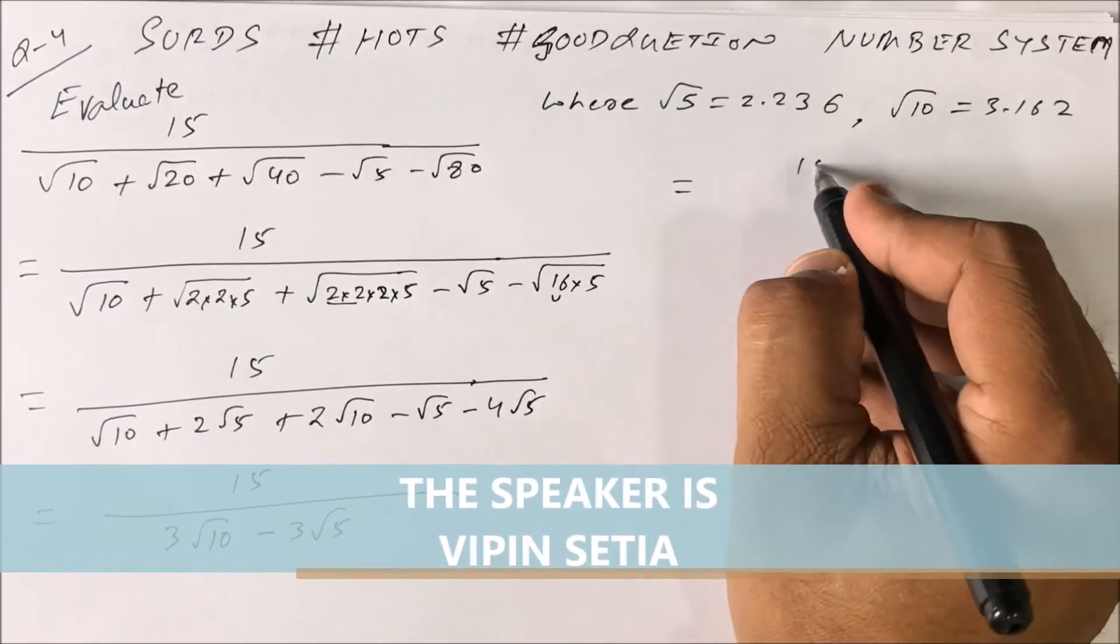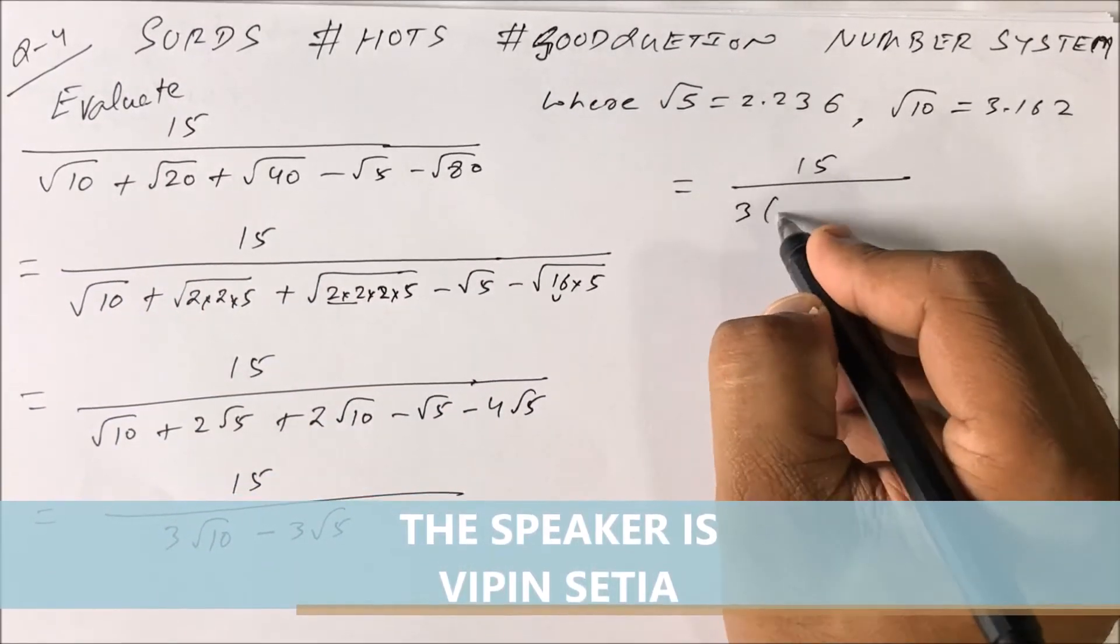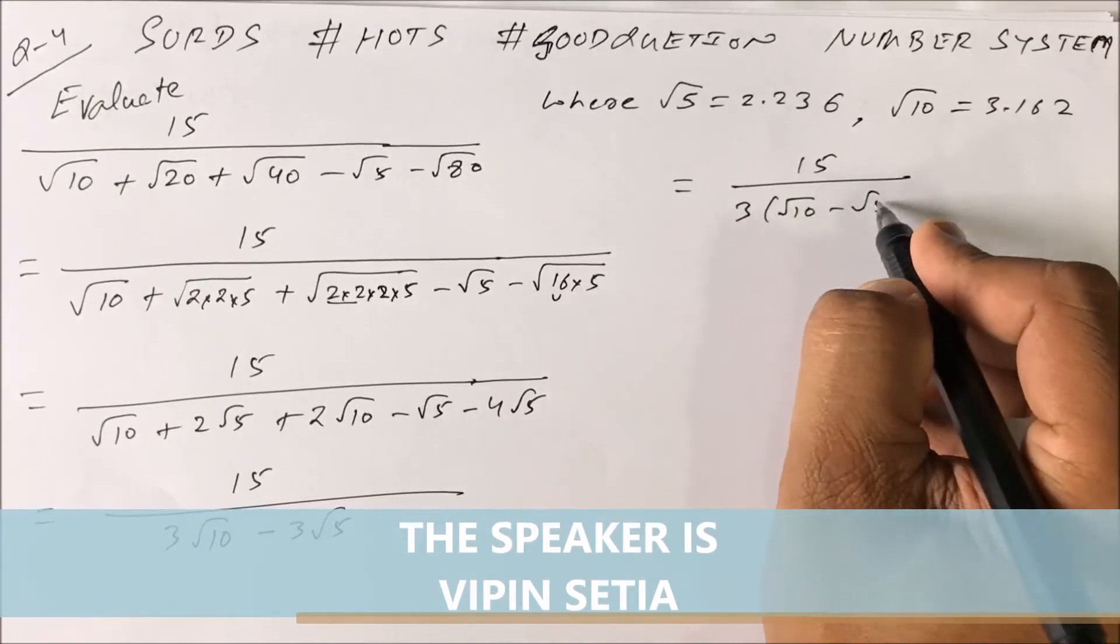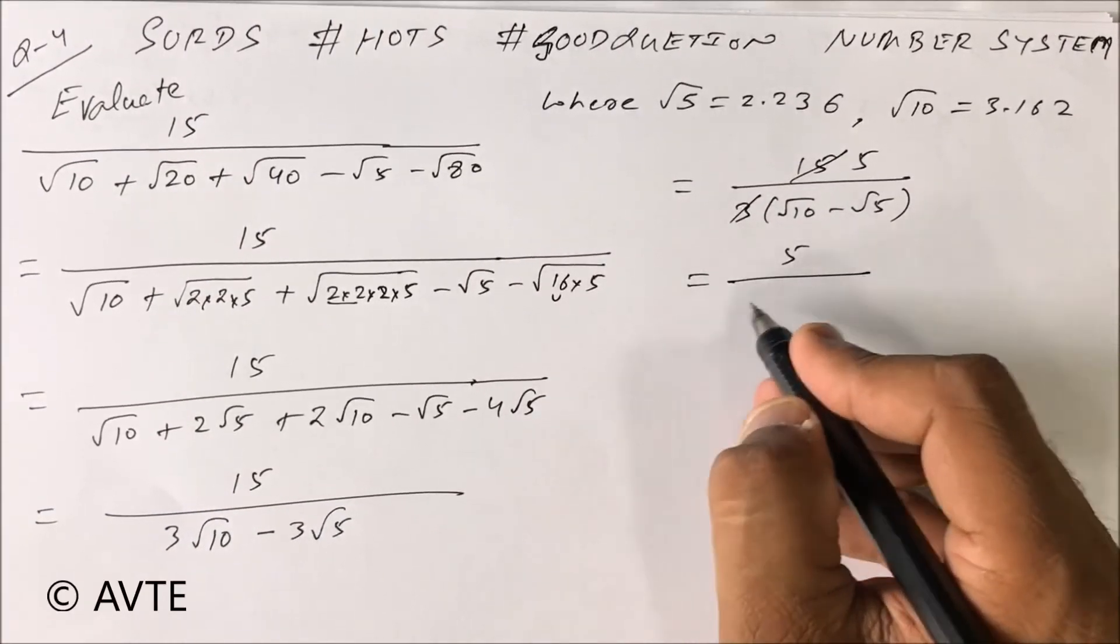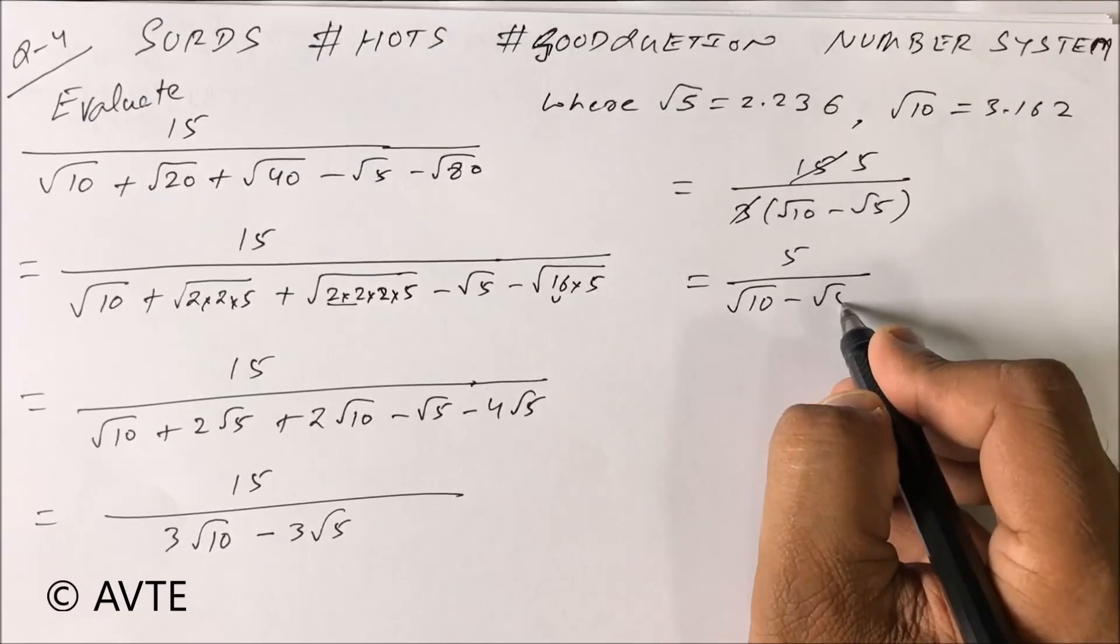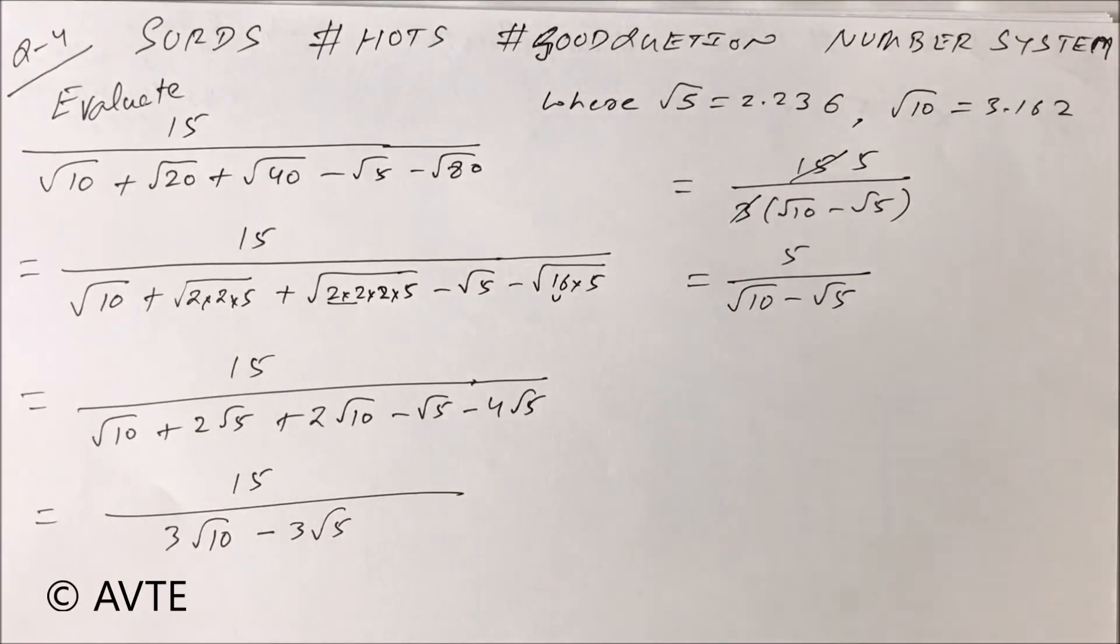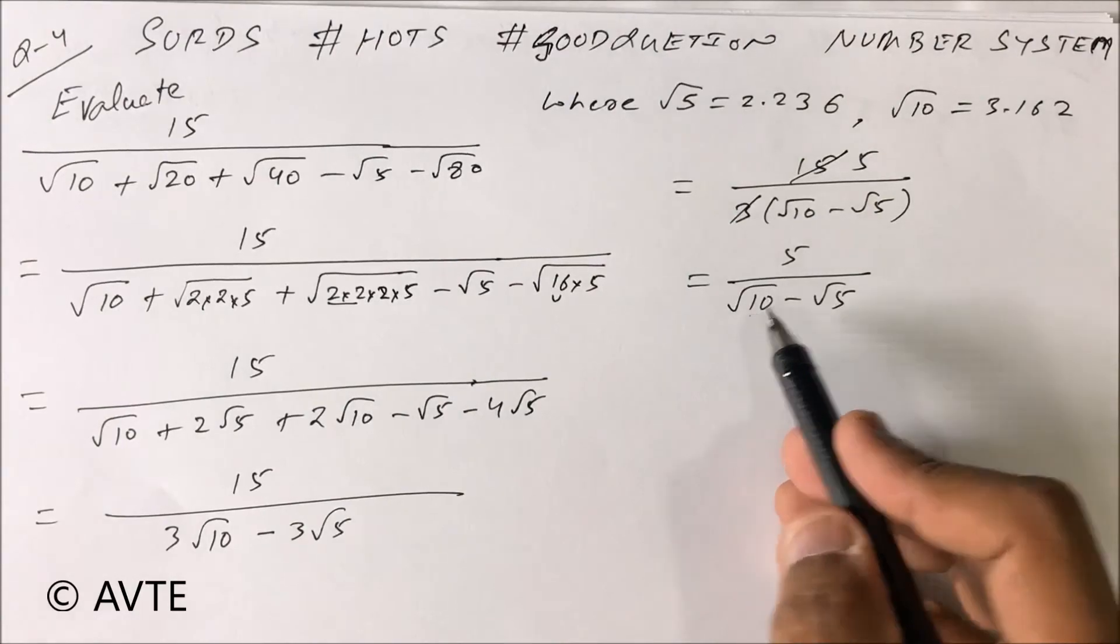You can take 15 upon - you can take 3 common: root 10 minus root 5. You can cut this - this is 5 upon root 10 minus root 5. Be careful, you don't have to put the value of root 10 here and root 5 here. You have to think.